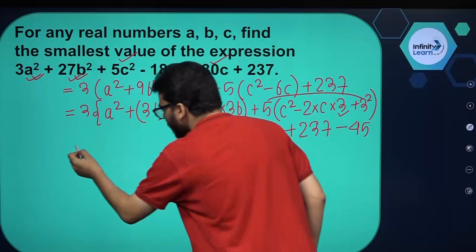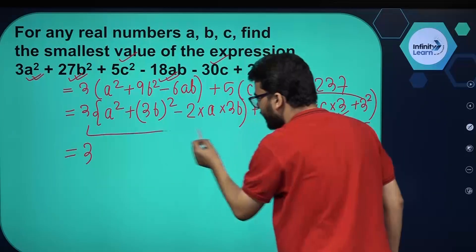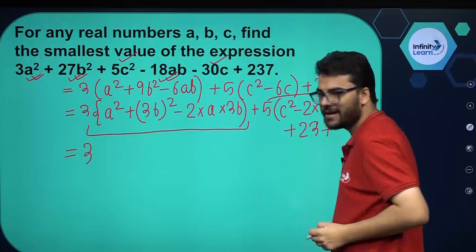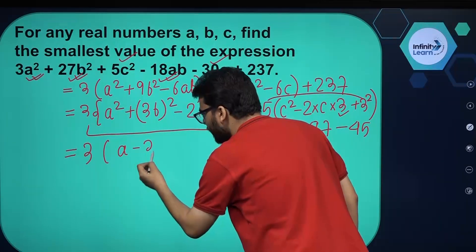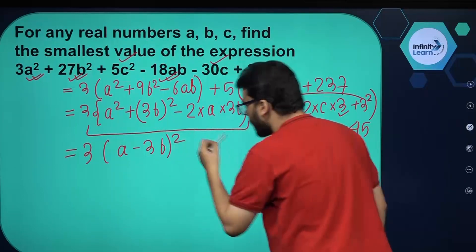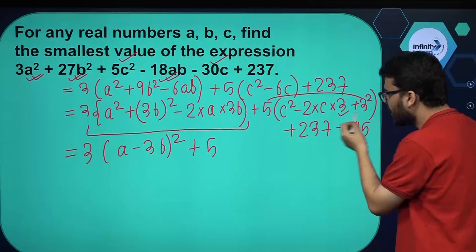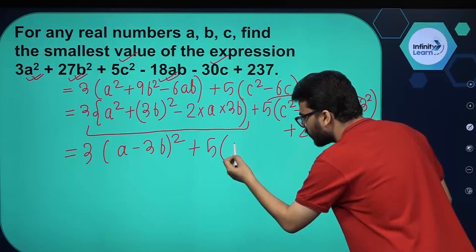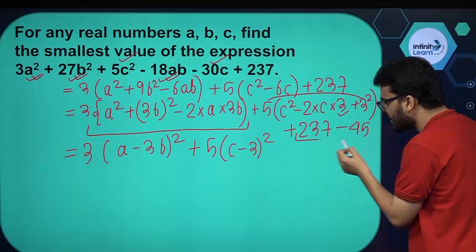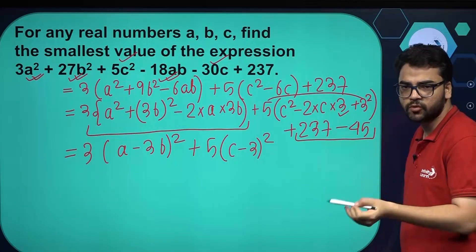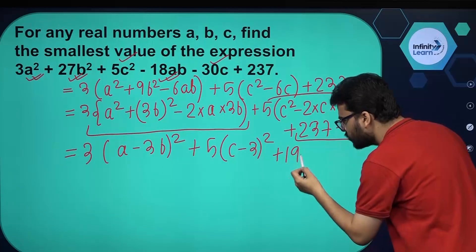After further simplification, using the (x minus y) whole square identity, we get (a minus 3b) whole squared plus 5 times (c minus 3) whole squared, and then 237 minus 45, which gives us 192.